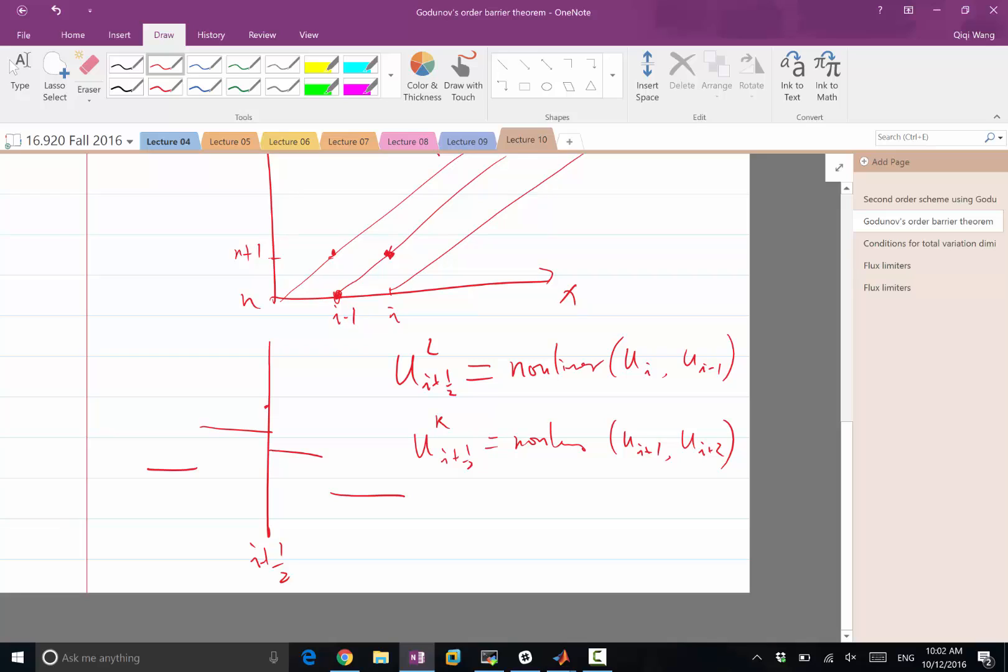So the question here is, how do we achieve that nonlinearity? What kind of nonlinearity is required? And through this process, we can also see an aspect of the order barrier theorem, why we need a nonlinear scheme.